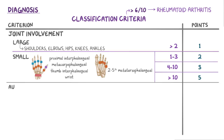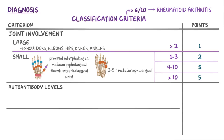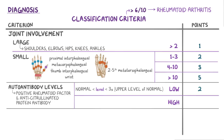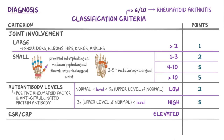The second criterion gives points based on the autoantibody levels. If there's a low positive rheumatoid factor or anti-citrullinated protein antibody, meaning above normal but below three times the upper limit of normal, that gives two points. If there's a high positive rheumatoid factor or anti-citrullinated protein antibody, meaning more than three times the upper limit of normal, that gives three points. The third criterion involves the ESR or CRP; if either are elevated, that gives one point. The fourth criterion involves the duration of arthritis, giving one point if it's lasted over six weeks.